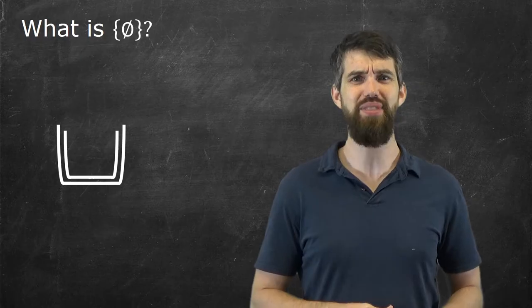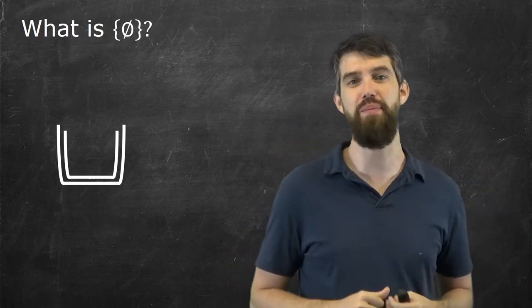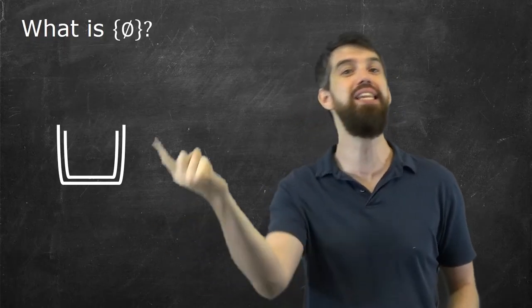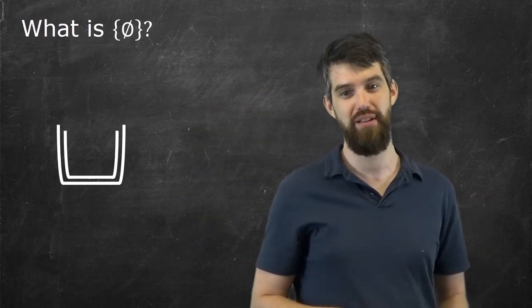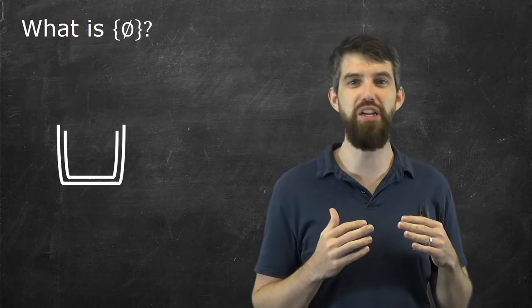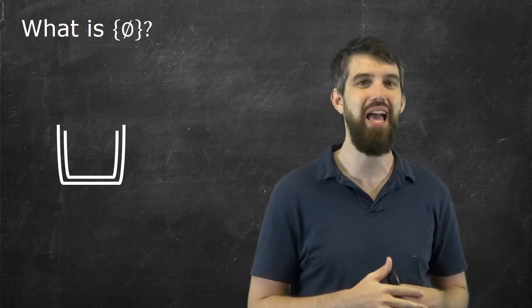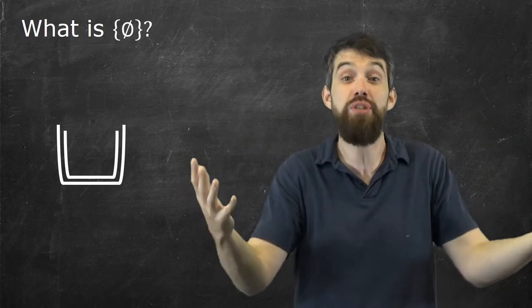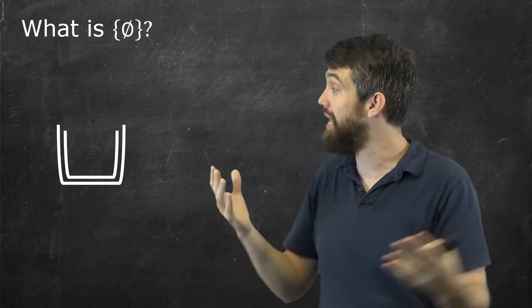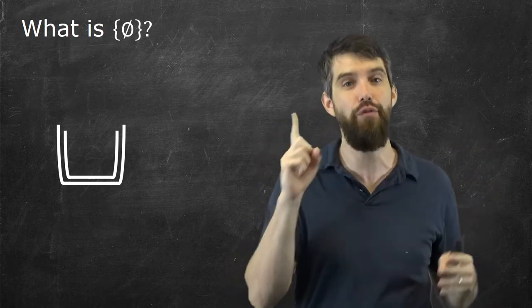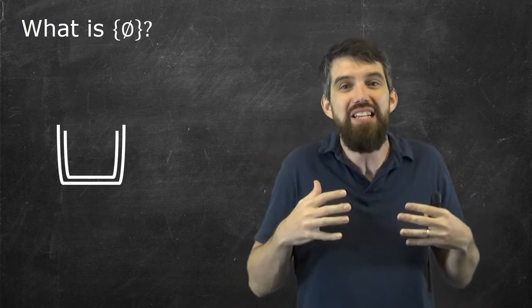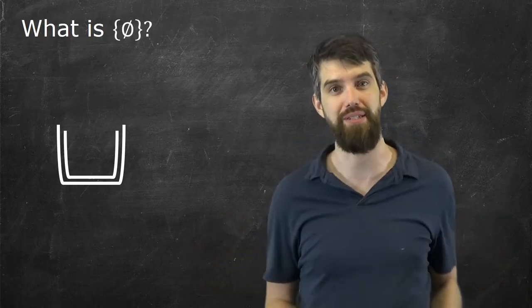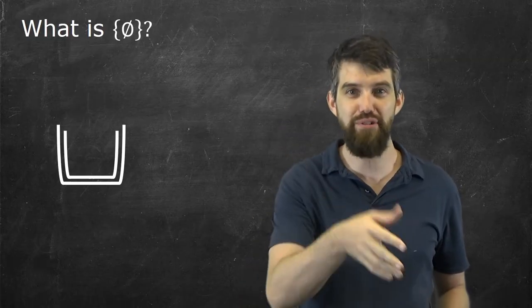So this is the set that does have an element in it, right? The big set, the outside set, has something inside of it. It has another set inside of it. It's important to keep in our mind clear what level we're at. If we're asking how many elements does this thing have, we're asking how many elements does the most outside thing have. The most outside set has one element inside of it. That was fun.